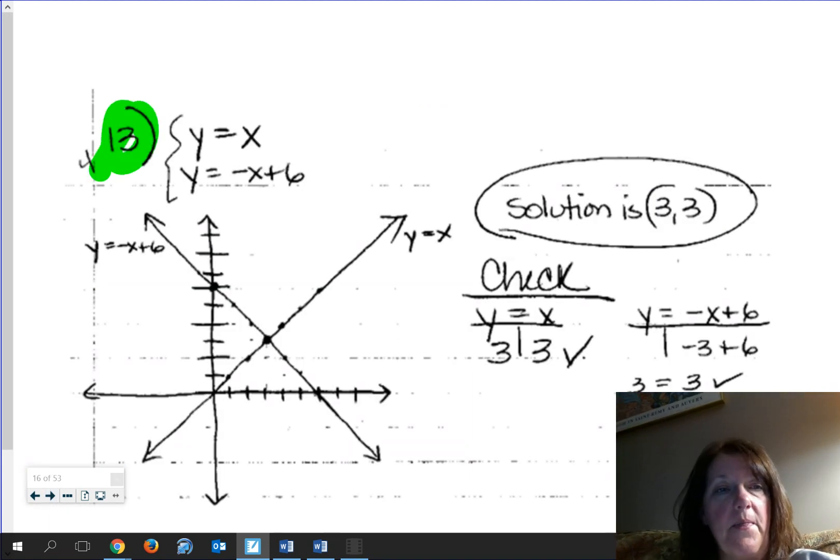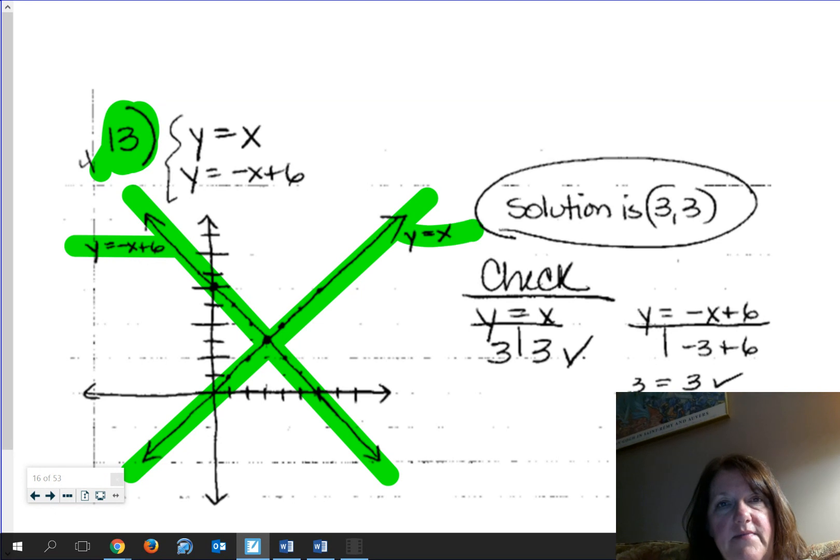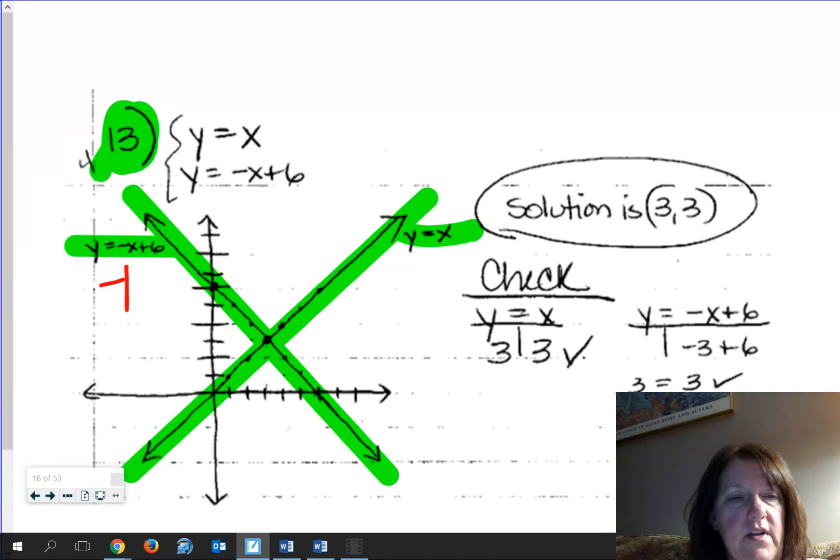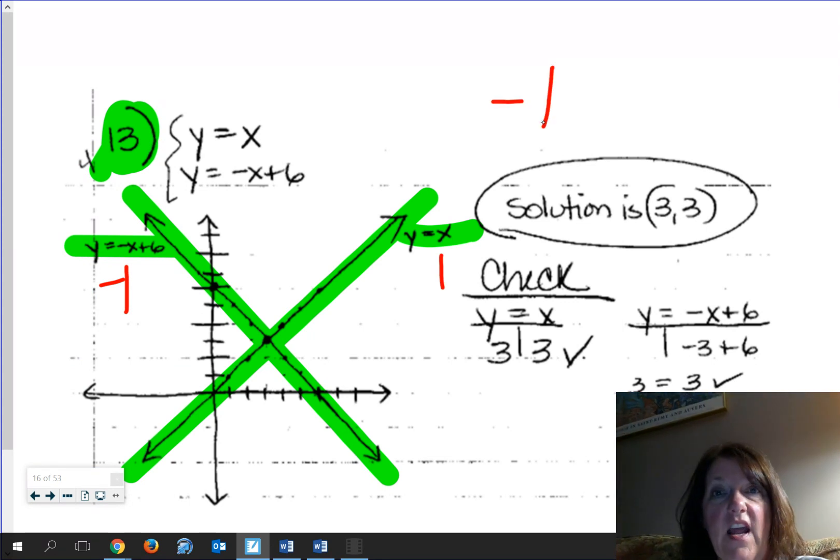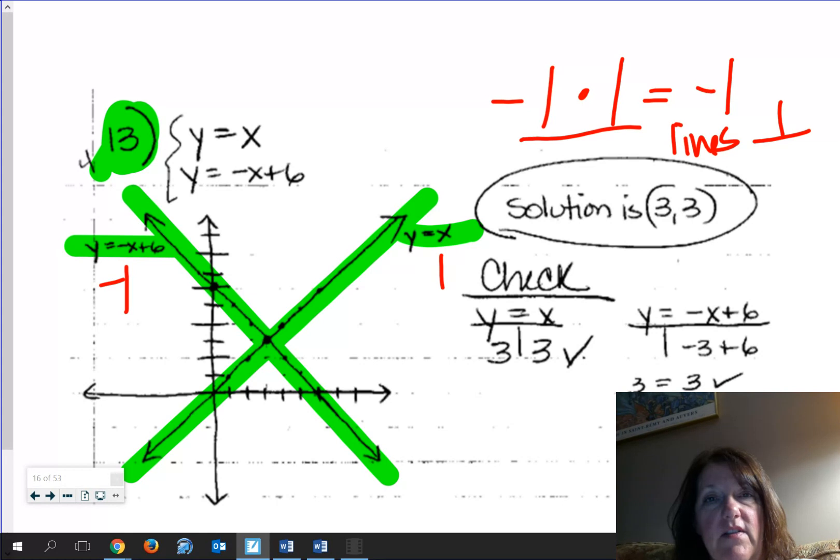Not sure if they showed you the graph in the back of the book, because it's an odd. But here are your two lines. You have y = -1x + 6 and y = x. Hey, cool. Do you notice something about the slopes of these guys? This one has a slope of negative 1. This one has a slope of positive 1. Negative 1 times positive 1 is negative 1, which means these two lines are perpendicular to each other.